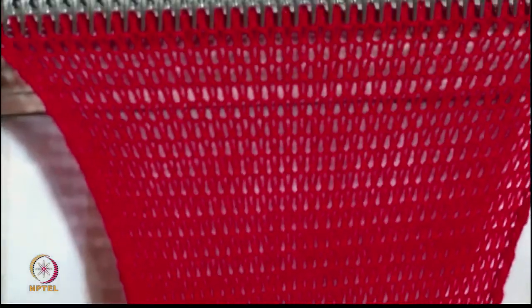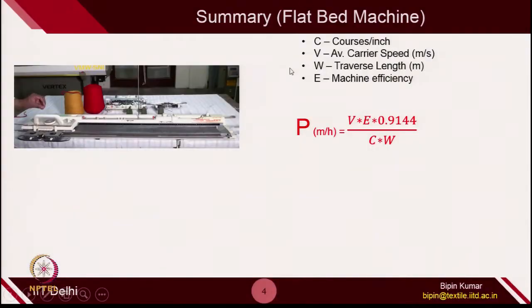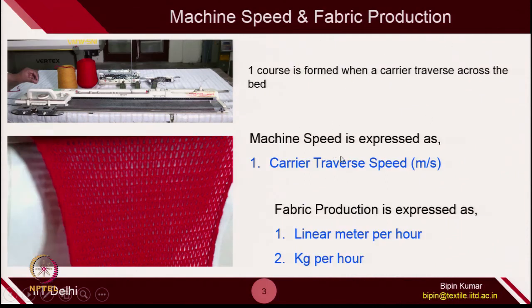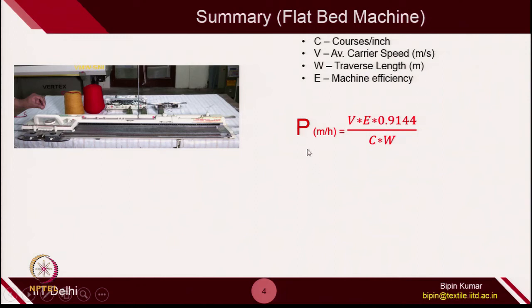In flat knitting machines, speed is expressed in carrier traverse speed, because the carrier traverses on the machine from left to right and right to left. We can express fabric production similar to circular machines as linear meter per hour or kg per hour. The formula for production on a flat bed machine equals velocity of the carrier (V), efficiency (E), courses per inch (C), and traverse length (W) — how much the carrier traverses on the bed. Let's derive this formula step by step.